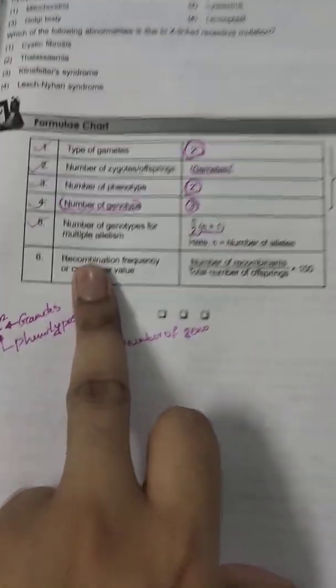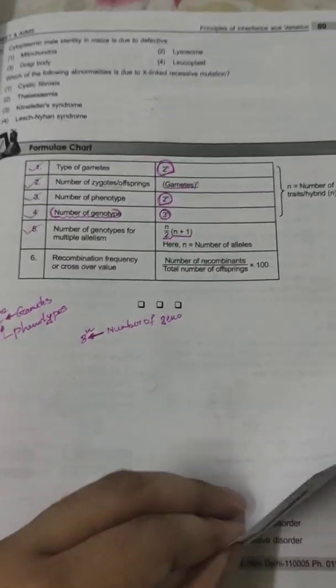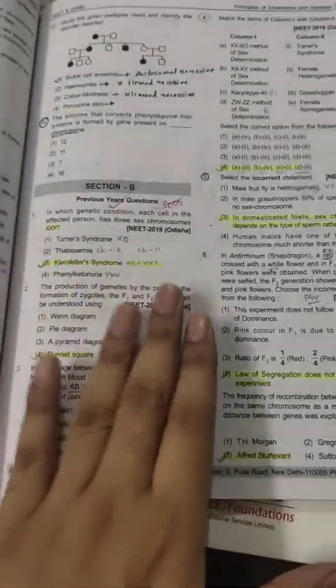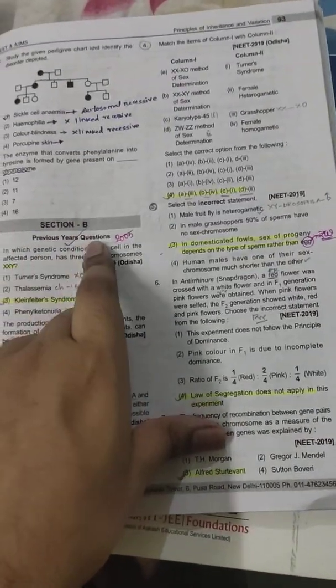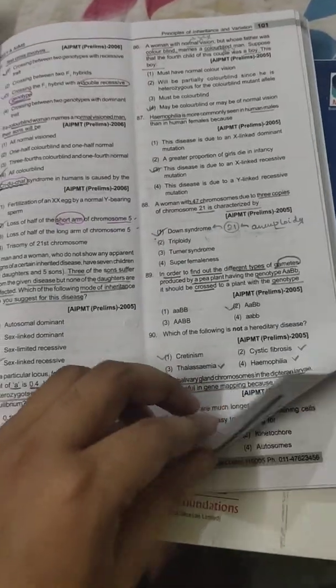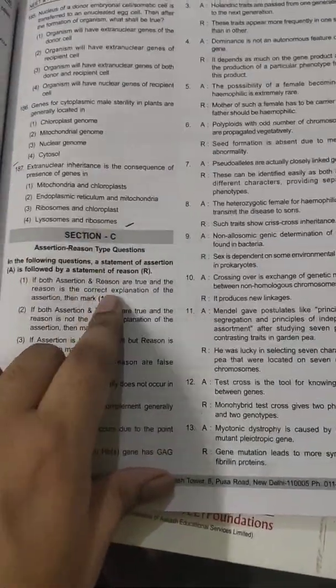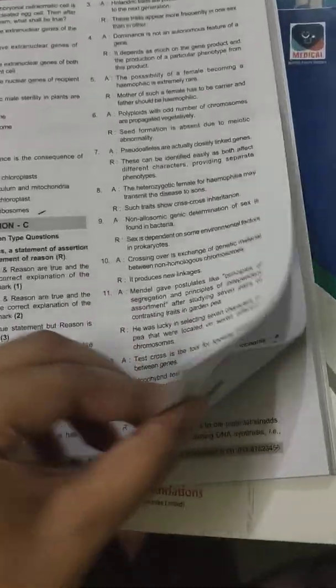Here is the formula chart, assignment Section A with conceptual questions, Section B for previous year questions which is very essential to solve from NEET point of view, and Section C with assertion-reason type questions.